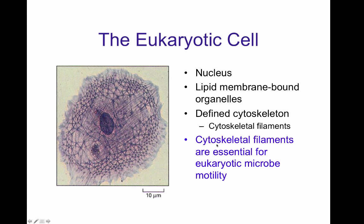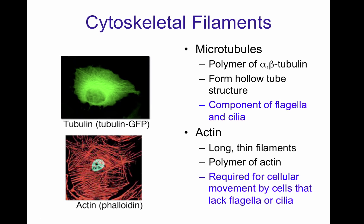One thing that we know is that the cytoskeleton filaments are essential for eukaryotic micromotility. Cytoskeletal filaments in eukaryote cells are composed of two major proteins, microtubules and actin.